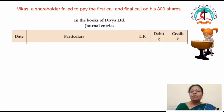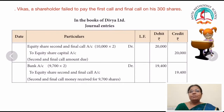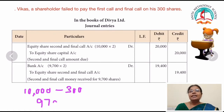Now for the second call. Equity share second and final call account debit — to equity share capital. This is the amount due. 10,000 at the rate of 2 = 20,000. The next journal entry is for receiving the call money. The shareholder failed to pay not only the first call but also the final call on 300 shares. So bank account: 10,000 minus 300 = 9,700 at the rate of 2 — to equity share second and final call: 19,400. Second and final call money received for 9,700 shares.